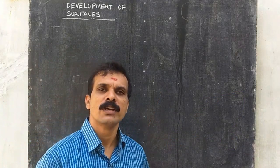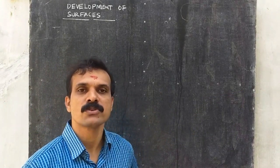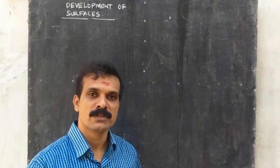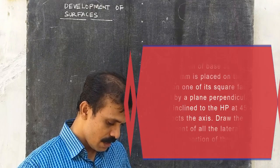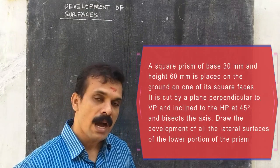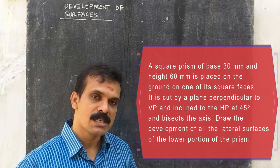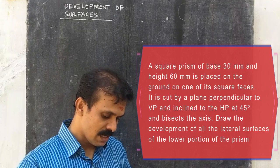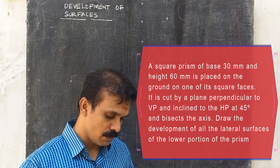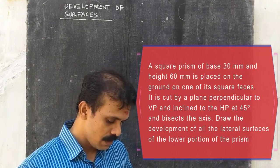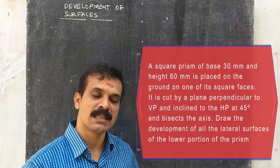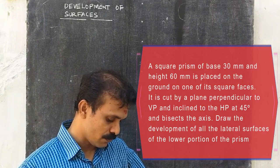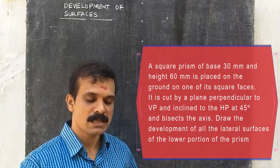Now we are moving to the problem zone. The first question: a square prism of base 30 mm and height 60 mm is placed on the ground on one of its square faces. It is cut by a section plane perpendicular to VP, inclined with HP at 45 degrees, and bisecting the axis. Draw the development of the lateral surface of the lower portion of the prism.